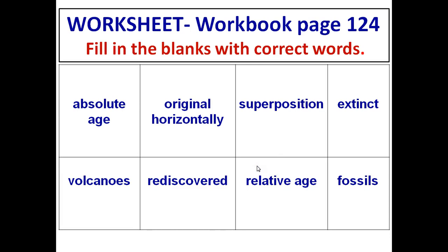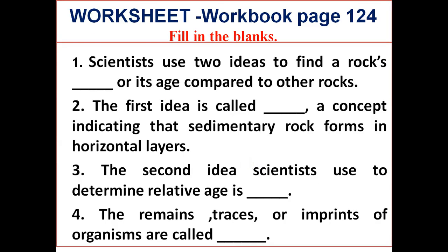Please open your workbook to page 124. The first sentence is: 'Scientists use two ideas to find a rock's dash, or its age compared to the other rocks.' The second sentence is: 'The first idea is called dash, a concept indicating that sedimentary rock forms in horizontal layers.' The third sentence is: 'The second idea scientists use to determine relative age is dash.'